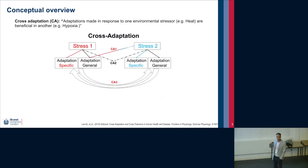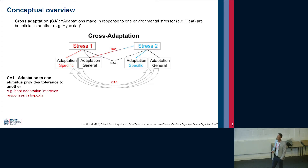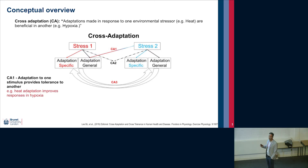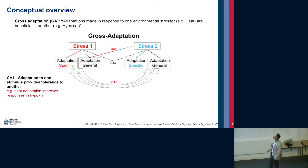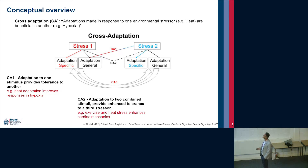I'll use this conceptual overview to introduce the different topics I'll cover. As Jim explained, cross-adaptation in its most simple form is adaptation to one stimulus — one environmental extreme — providing tolerance in another. Heat adaptation improving responses to hypoxia is one example. Having heard Chris's talk, given that heat adaptation improves gut barriers and reduces the endotoxin response, I wonder if heat acclimation might help improve outcomes from a hangover — maybe something to work on in the future. That's the most simple form of cross-adaptation.